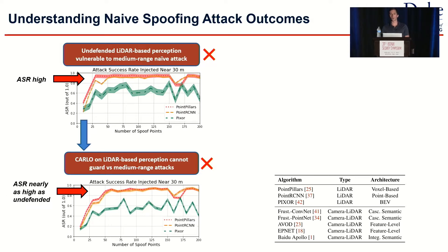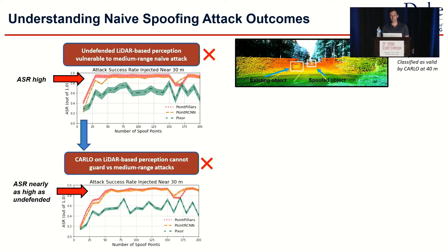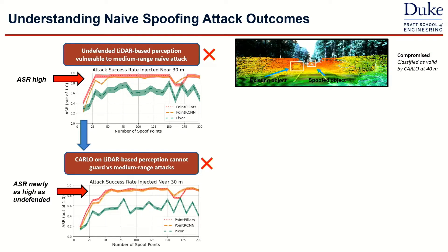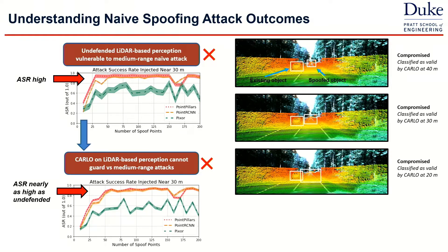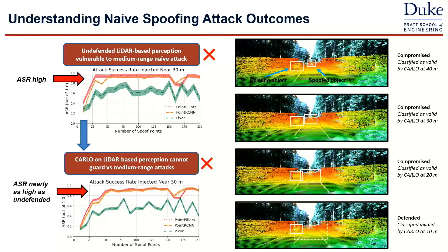Why is it important that CARLO works at close range but not at medium range? If an attacker initiated an attack over a longitudinal sequence starting at medium range, they could create a scenario the victim vehicle would think is dangerous. We showed there's an existing true object, and we've spoofed an object at 40 meters. Over time, the spoofed object appears to get closer — at 30 meters, then 20 meters. It's not until 10 meters that CARLO recognizes, based on its physics-based assumptions, that this vehicle is fake. So the attacker could create longitudinal circumstances where after only a couple of frames, the victim vehicle would perform emergency braking or evasive maneuvers.